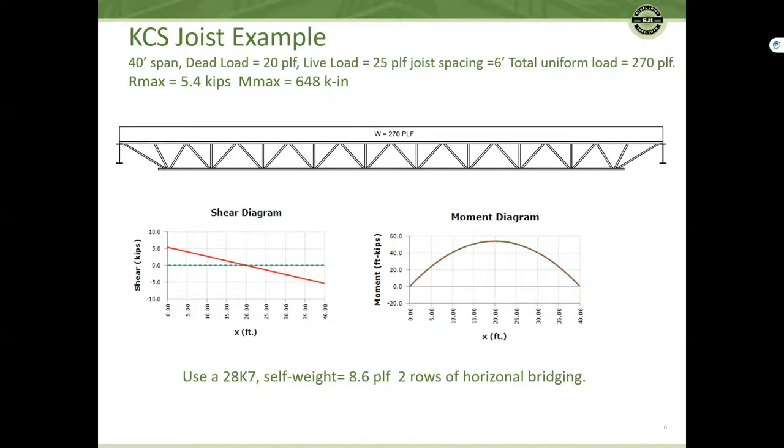The total uniform load is 270 PLF. The resulting end reaction is 5.4 kips and the maximum moment is 648 kip inches at the center line of the joist. The standard SJI designation could be a 28K7, self-weight 8.6 PLF, and two rows of horizontal bridging is required.